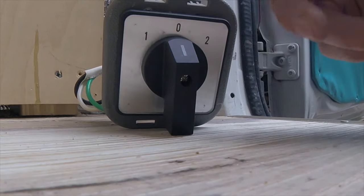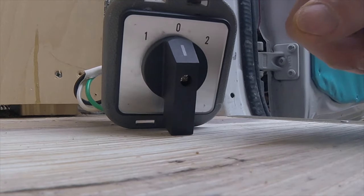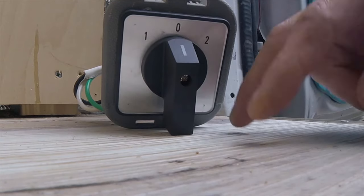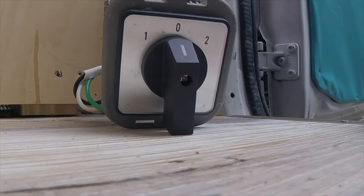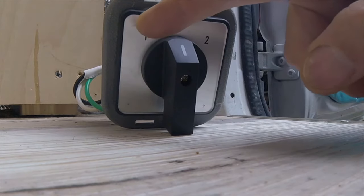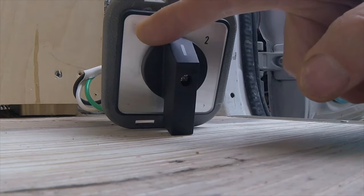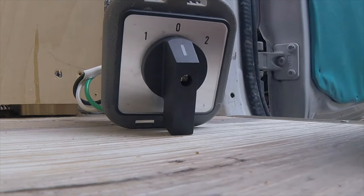There's two inputs and one load. However, I want to use this in reverse. I want two loads and one input, so I want shore power coming in, and I want to be able to toggle from one load to the same power source and the other load from the same power source. So how do we do that?